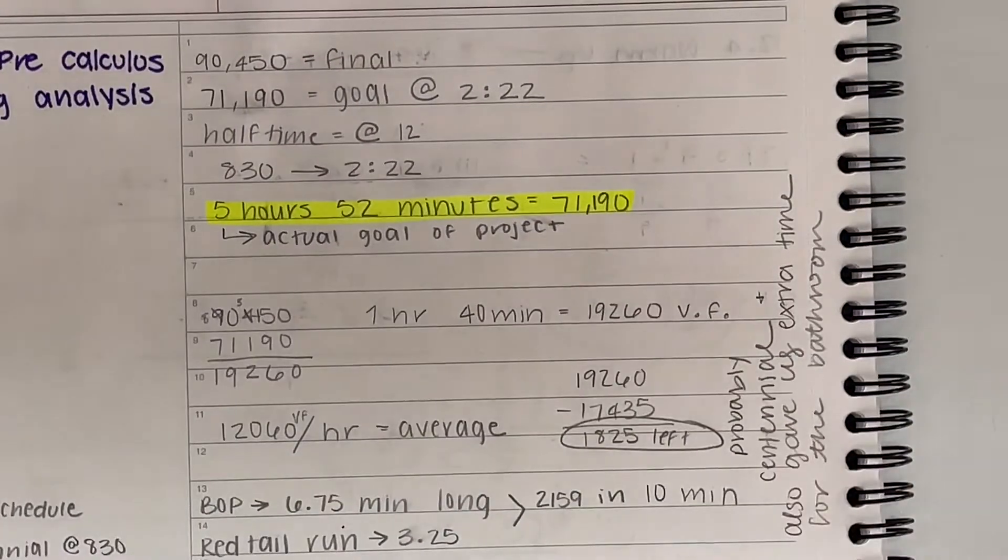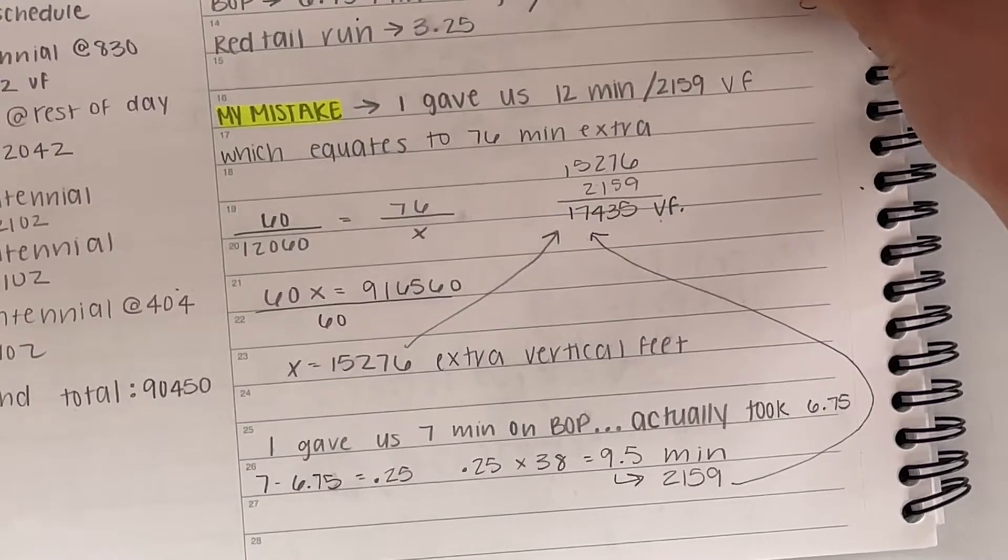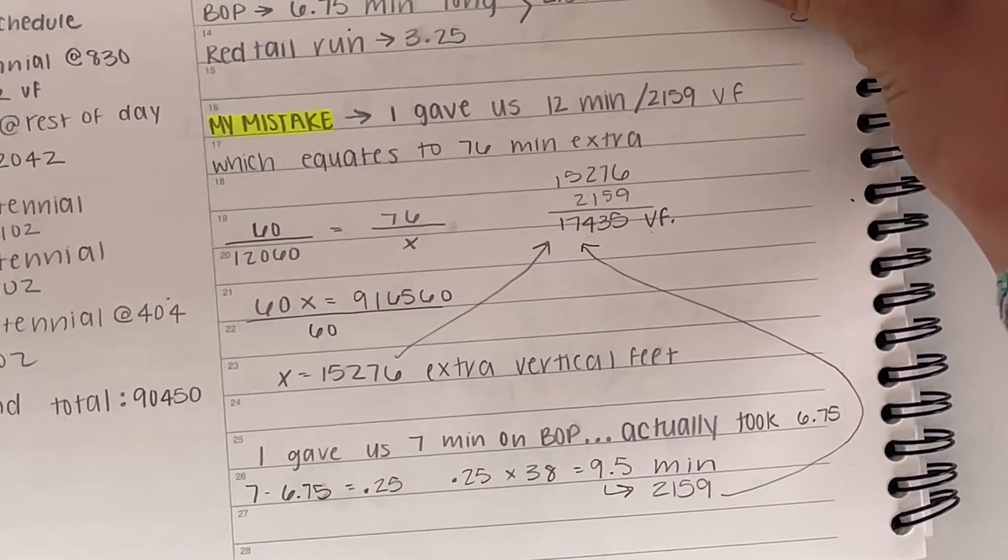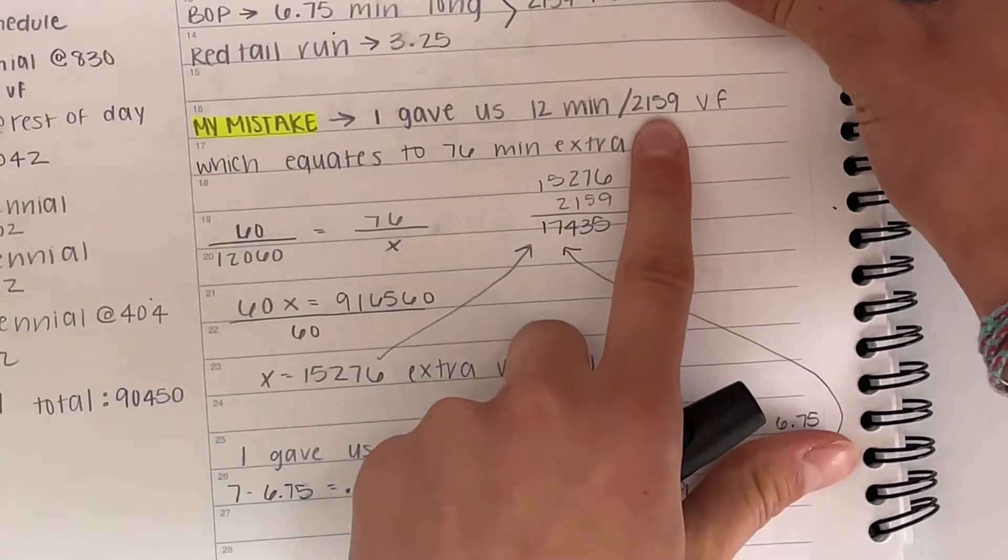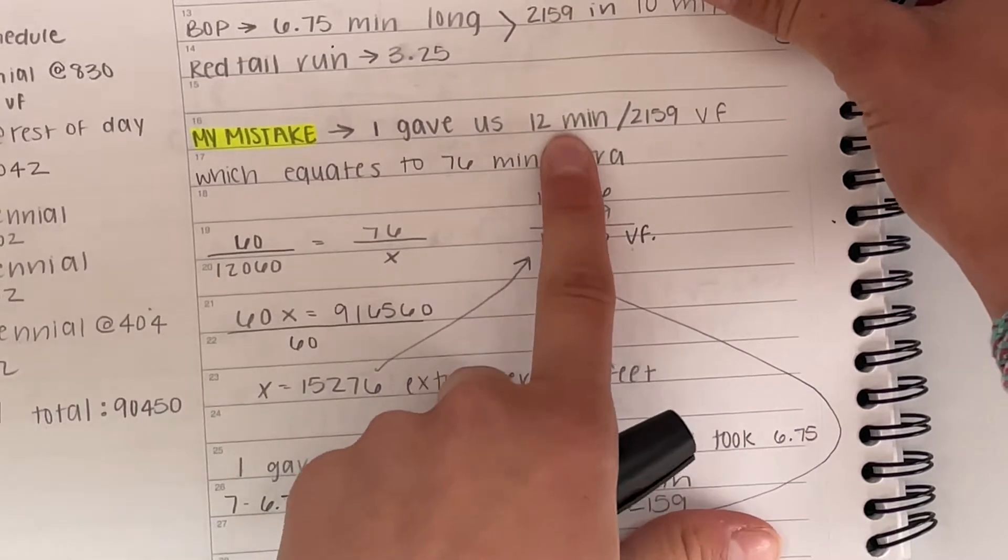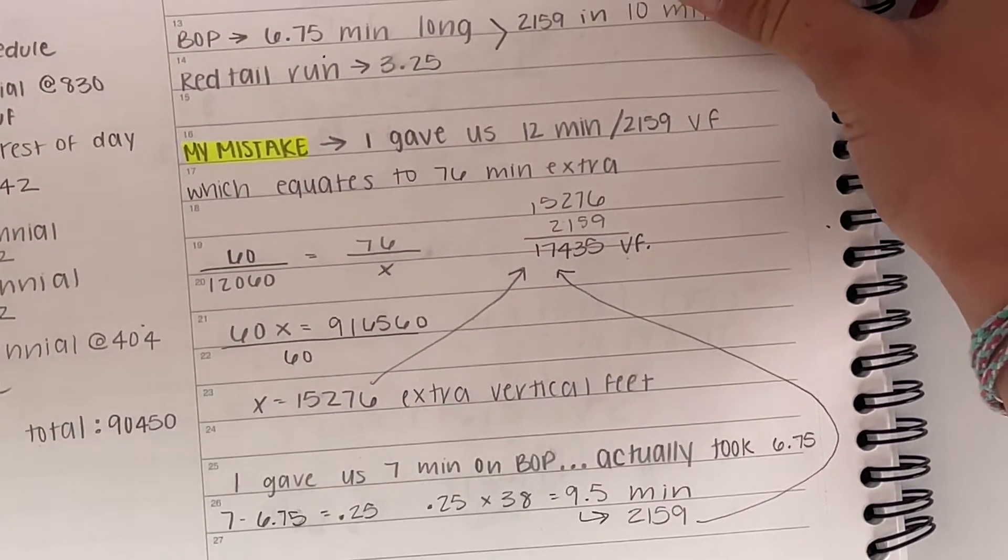Now let's go back to the math. So let's scroll down actually just a little bit. So the mistake I made with my calculations first is I'm going to admit I made a mistake. I gave us way too much time to do 2,100 or 2,159 vertical feet. I thought it would take us about 12 minutes. It actually took Carter and I an average of 10 minutes each time.